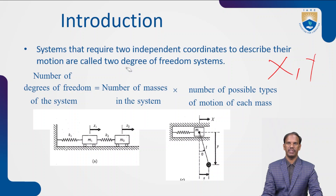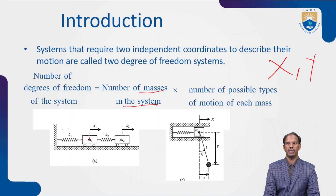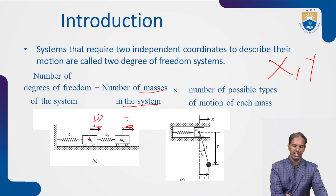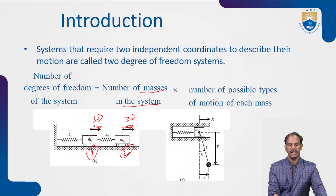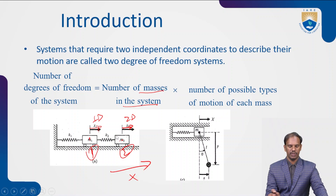The number of degrees of freedom equals the number of masses in the system multiplied by the number of possible types of movement for each mass. So if we have mass one and mass two, each able to move a distance in x, that gives one degree per mass. With two masses moving in the same direction (x direction) but at two different positions, we have two degrees of freedom.